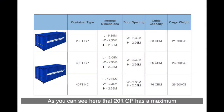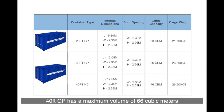The 20 feet GP has a maximum volume of 33 cubic meters and a maximum weight of 21.7 thousand kilograms. The 40 feet general purpose container has a maximum volume of 66 cubic meters and a maximum weight of 26.5 thousand kilograms.